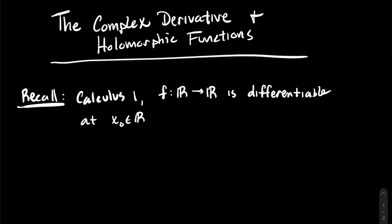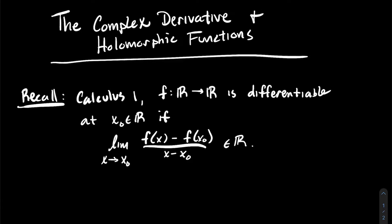We're going to say that f is differentiable at a particular real number x₀ if the following limit exists. And when I say it exists, I mean it's got to be a real number — it can't be infinity or minus infinity, and of course it can't be 'does not exist.'